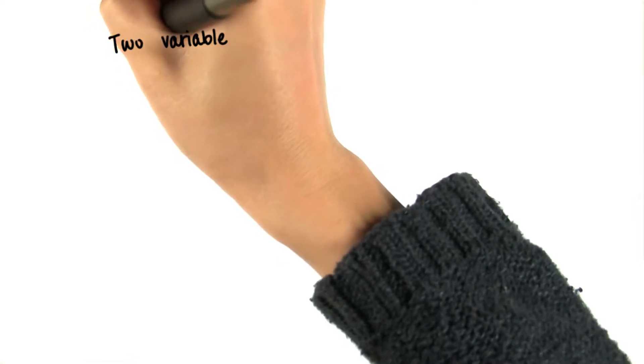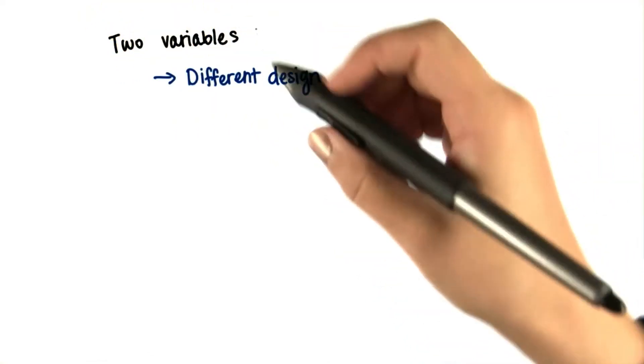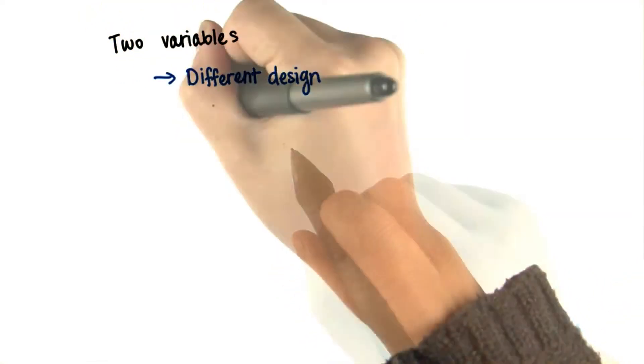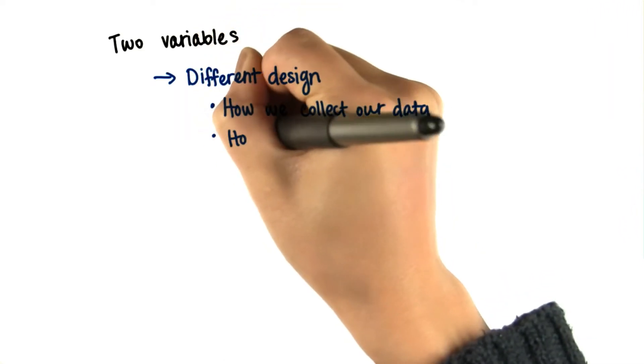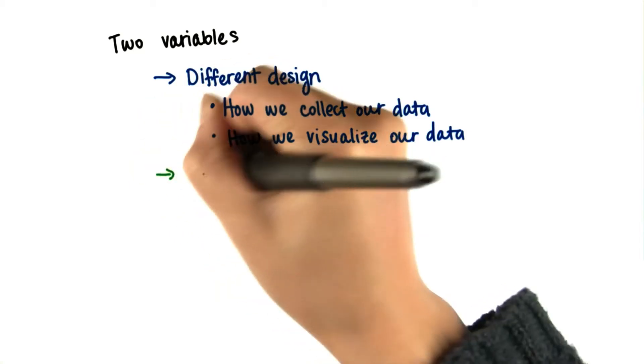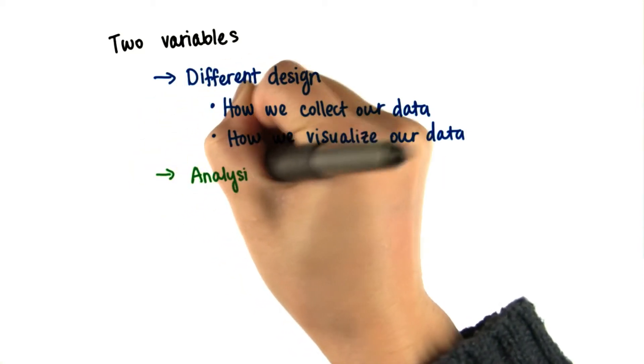But now we're going to focus on two variables. With two variables, we have a different design. This means we need to change how we collect our data, how we visualize our data. However, our analysis is going to be pretty similar, and you'll see later.